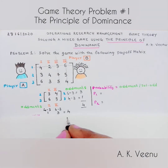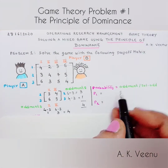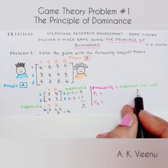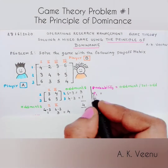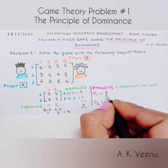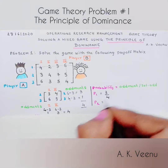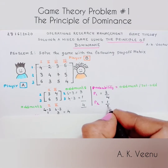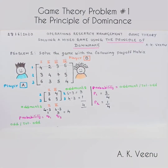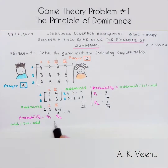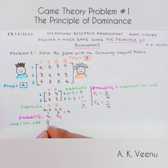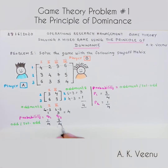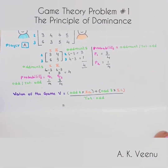The total oddment is 4 for both players. To find the probability, the formula is: oddment divided by total oddment. So p1 = 3/4 and p2 = 1/4. For player B, q1 = 1/4 and q2 = 3/4.